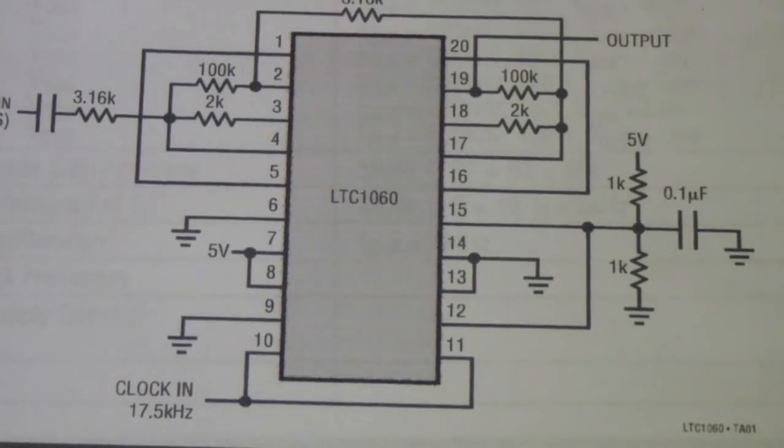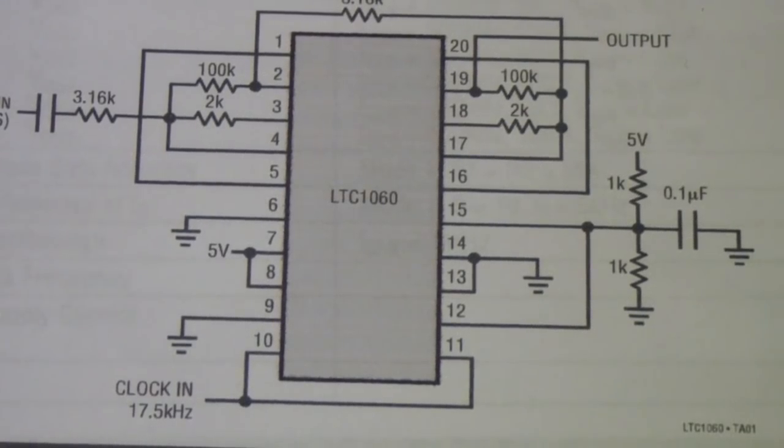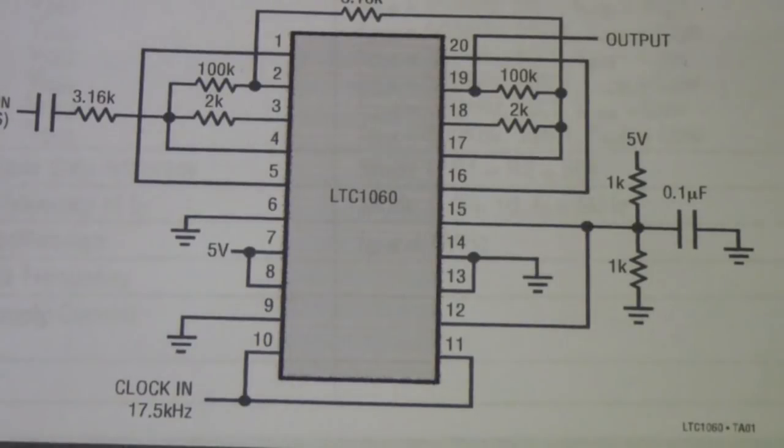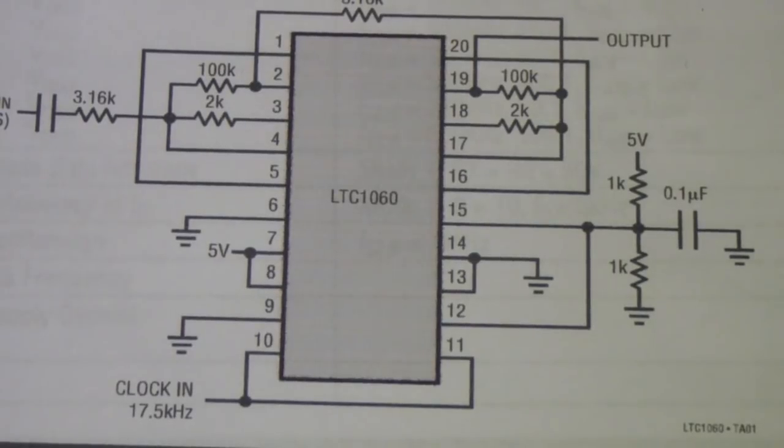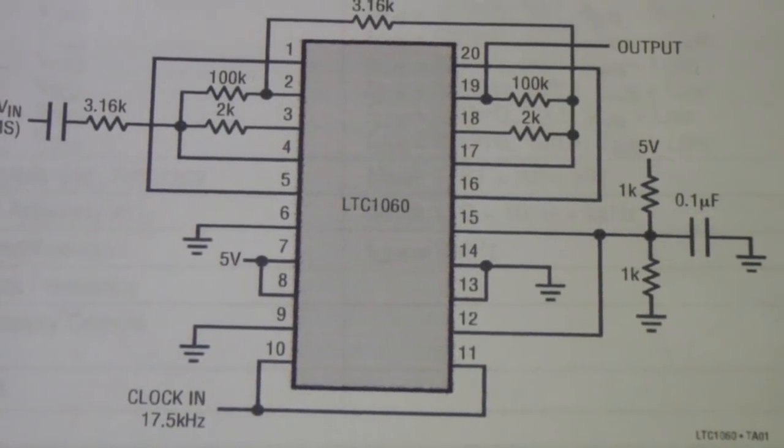This will work off of supplies as low as plus or minus, a little under 3 volts, up to plus and minus 5 volts. So let's take a look at the analog discovery and then we'll come back and look at the block diagram of this circuit.